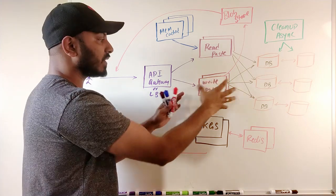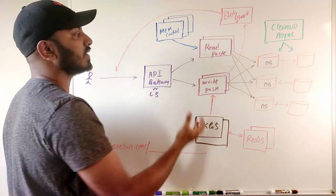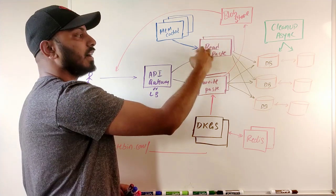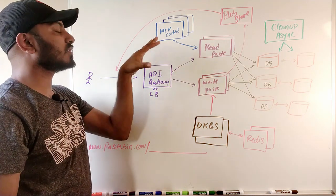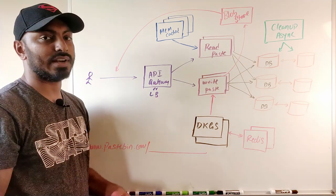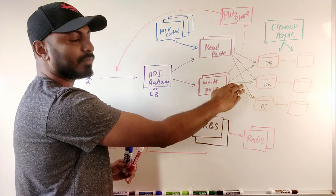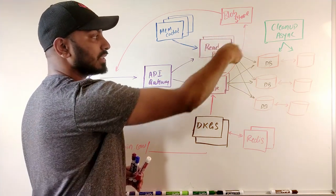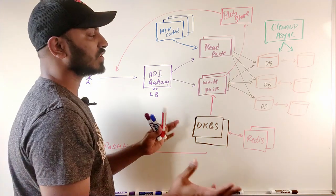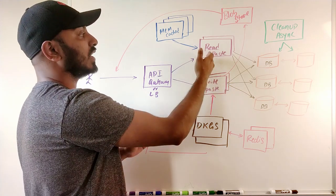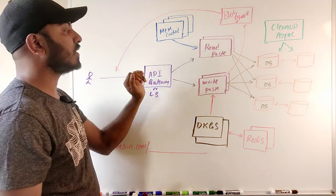We use Memcached for caching frequently accessed pastes. Since the read-to-write ratio is 10:1, the read side needs more scaling. With serverless functions, scaling is automatic; with EC2 instances you might need 10x more read instances than write instances, determined through load testing. Memcached is used over Redis here because it is multi-threaded and offers higher performance.